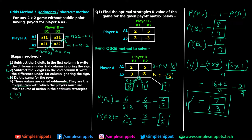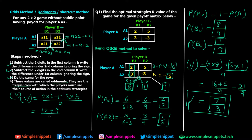Alternatively, you can take the first column and multiply by the row oddments: V equals (2×6 + 3×3) divided by 9, which gives 12 plus 9 over 9, again 21 over 9, or seven-thirds. You can also use the second column with row oddments, or the second row with column oddments — all four approaches always yield the same value, which is seven-thirds in this case.